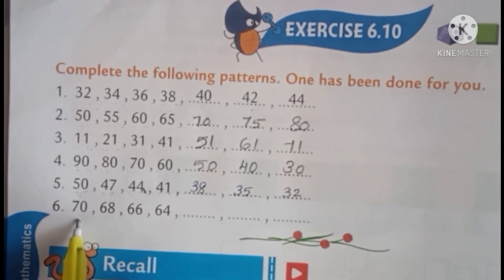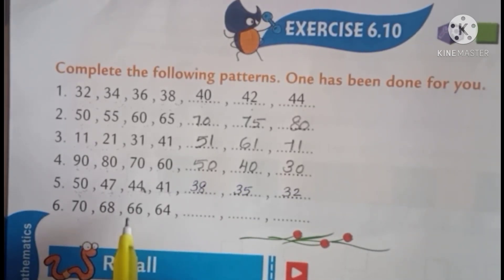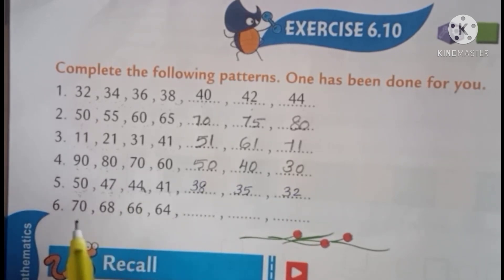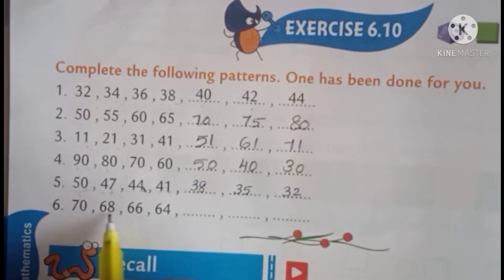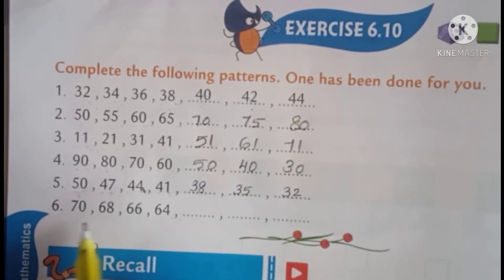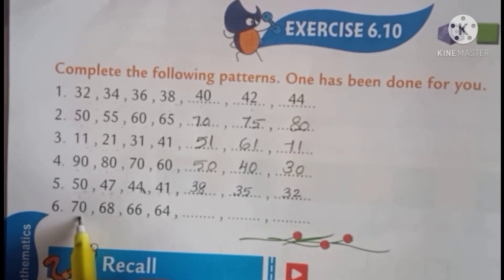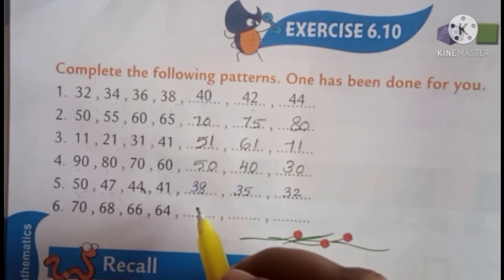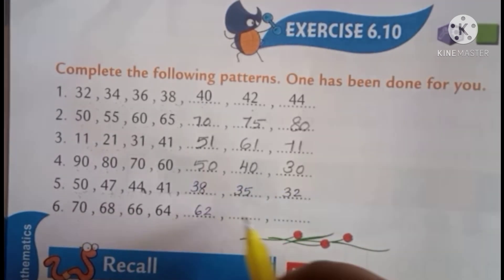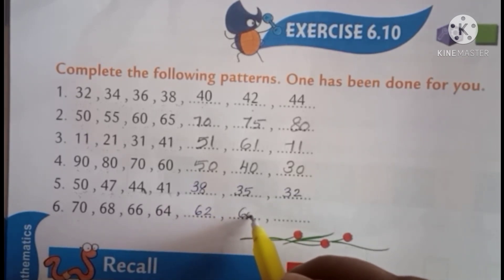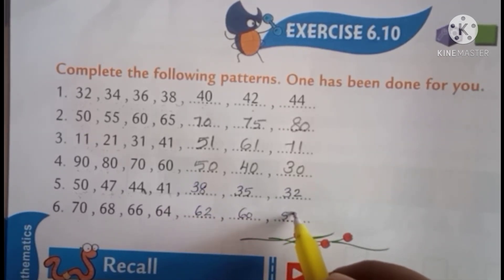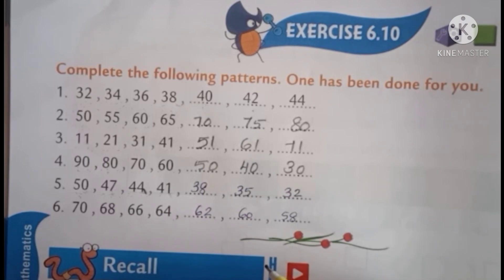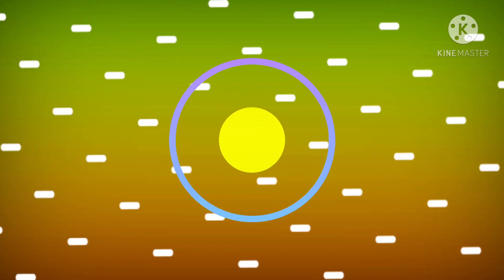Next: 70, 68, 66, 64. Decreasing by 2 each time. So: 70, 68, 66, 64, next is 62, 60, 58. Understood all of you?